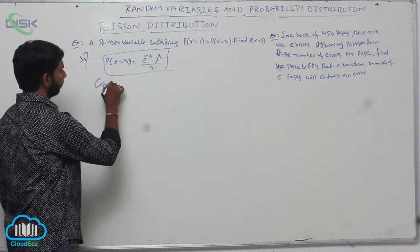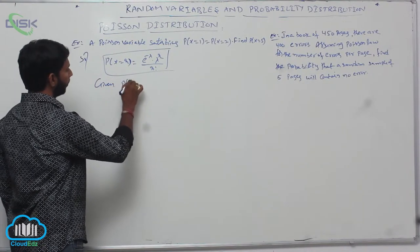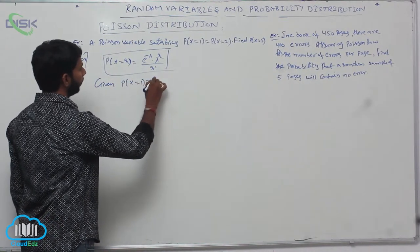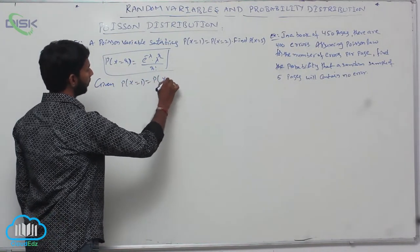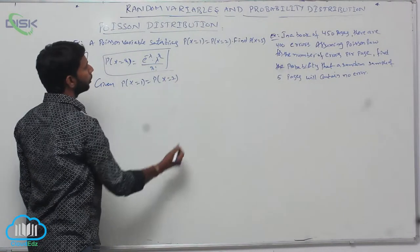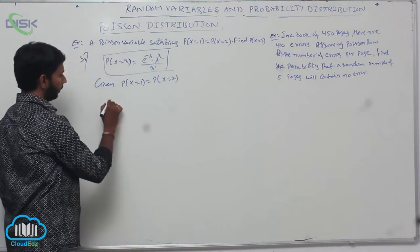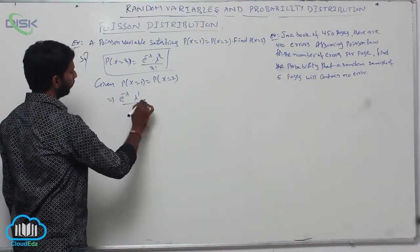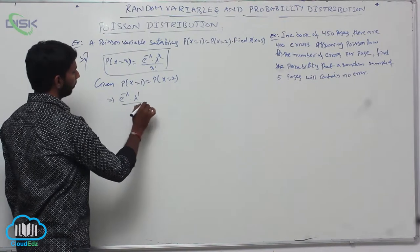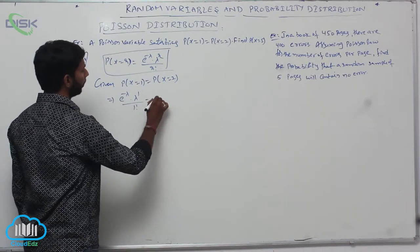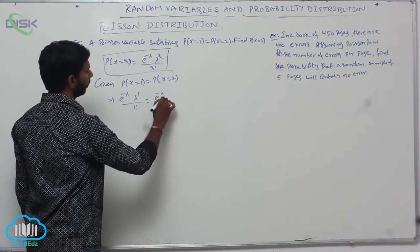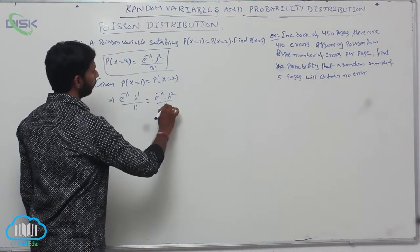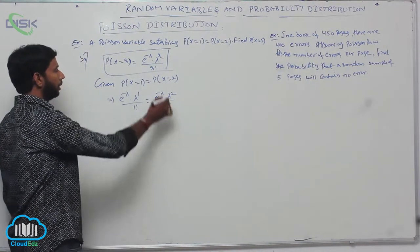Given P(x=1) = P(x=2), it implies e power minus lambda into lambda power 1 by 1 factorial is equal to e power minus lambda into lambda squared by 2 factorial.